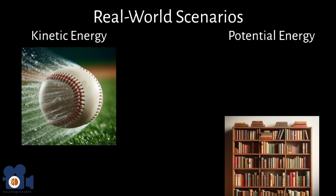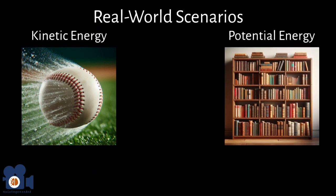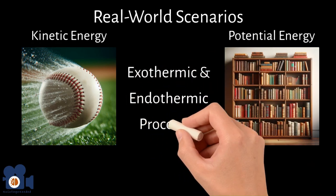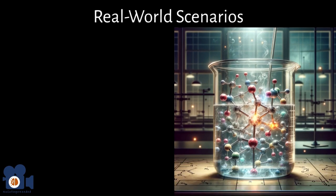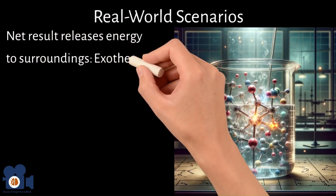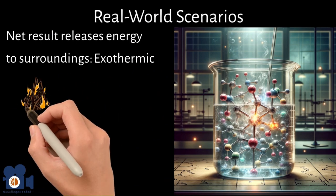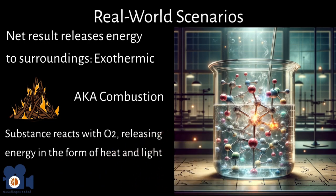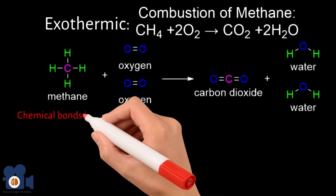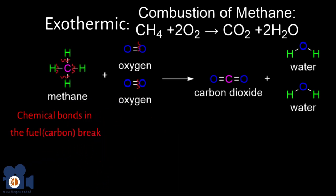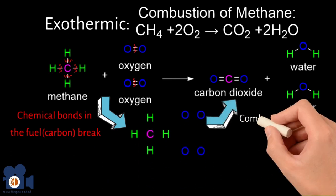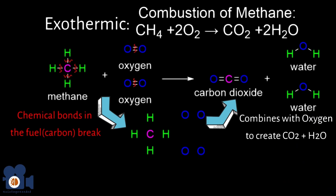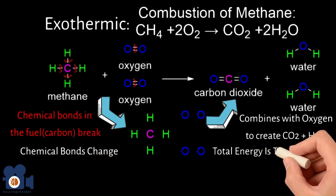Energy exists in two main forms: kinetic energy associated with motion and potential energy associated with position. Now let's imagine these at play in exothermic and endothermic processes. In a chemical reaction where bonds are broken and formed, if the overall result releases energy into the surroundings, it's an exothermic process. A great example is fire — combustion is an exothermic reaction that occurs when a substance reacts with oxygen, releasing energy as heat and light. Chemical bonds in the fuel break as it combines with oxygen to form products like carbon dioxide and water, releasing energy through rearrangement of chemical bonds. The first law tells us the total energy of the system and its surroundings remains constant.